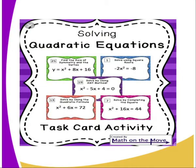For example, when we look at what is on the screen, we have different ways we can get the equation. We can have y = x² + 8x − 16. That is a quadratic equation. We can also have −2x² = −8. That is a quadratic equation. We can also have x² − 5x + 4 = 0, or x² + 6x = 72, or x² + 16x = 44. All those are equations that can be presented to you, and you are required to take them back to quadratic form and use the equation.